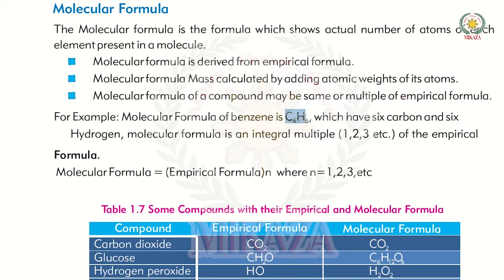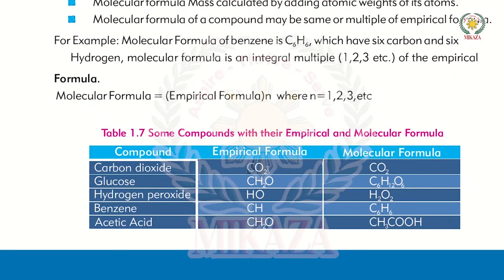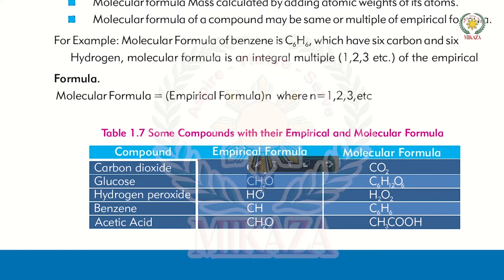For C6H6, the ratio simplifies to CH — that is the empirical formula. For water H2O, it cannot be simplified, so the empirical and molecular formulas are the same. For glucose, the empirical formula is CH2O but the molecular formula is C6H12O6 — they are different, but if you multiply CH2O by 6 you get C6H12O6.